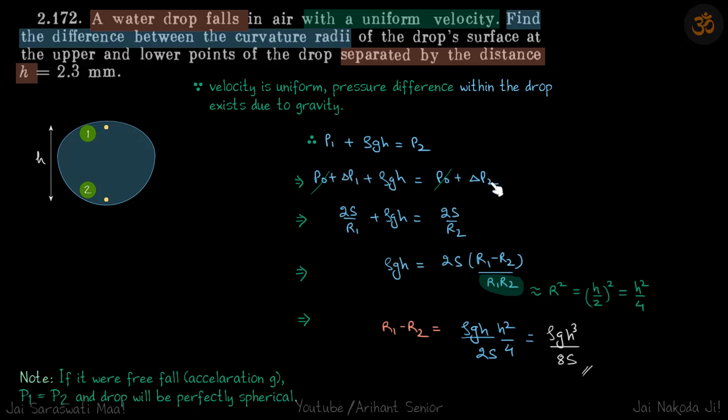This Δp is due to the curvature radii here and here. Obviously the curvature radii will be different, so Δp will also be different. That's what we need to find: the difference between the curvature radii. One pressure difference we got because of the height, and another pressure difference we will get because of the difference in curvature radii.